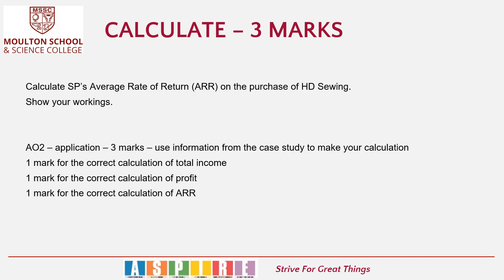We now have a three-mark calculation question: calculate SP's average rate of return on the purchase of HD Sewing. Show your workings. This is an application question — you're using data in your calculation. You get one mark for calculating total income, one mark for calculating profit, and one mark for calculating the average rate of return. If you show your workings at each step, that will enable you to pick up marks even if your final answer is wrong. This was one of the worst-answered questions when this exam was sat, so it is worth spending time making sure you understand how to calculate average rate of return.